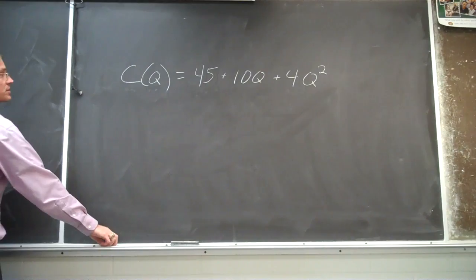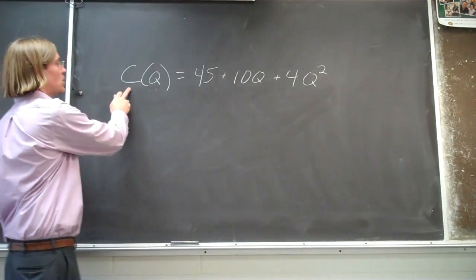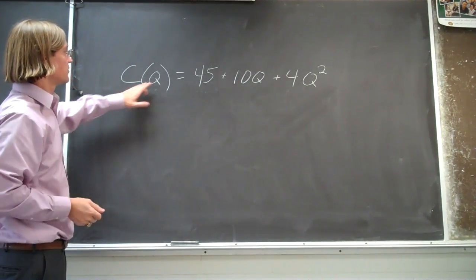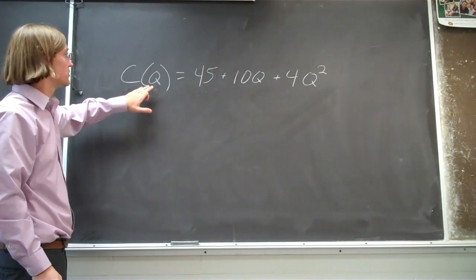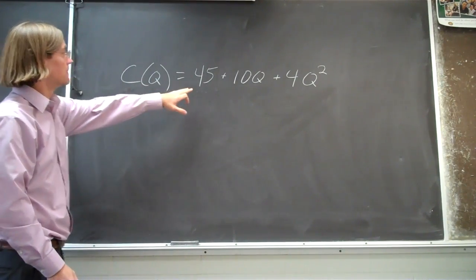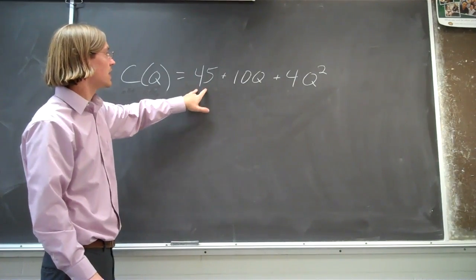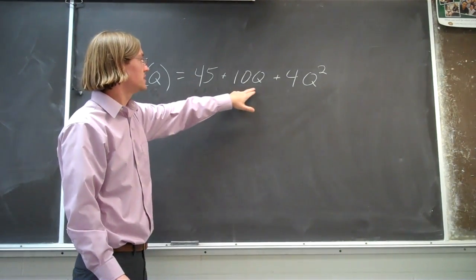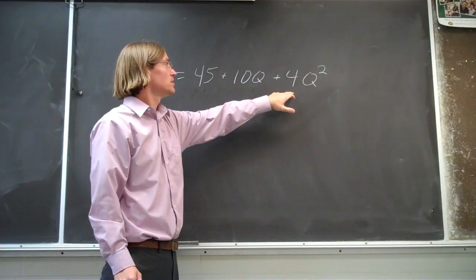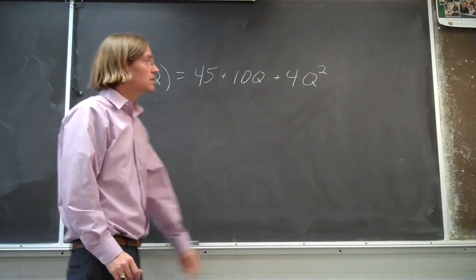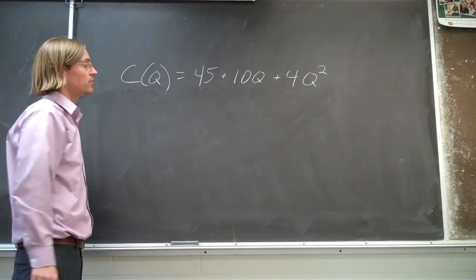So let's review this cost function. We've got cost, our total cost, as a function of Q, as a function of our output. The cost function, total cost is equal to 45 plus 10 times Q plus 4 times Q squared. So it's a quadratic function.